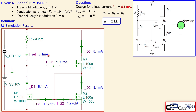In the simulation circuit, M1, M2, and M3 all have the same length and width of 100 micrometers. The simulation confirms IRF is 8.1 milliamps and the load current is also 8.1 milliamps. The gate currents are essentially zero — on the order of femtoamps (approximately 1.9 and 1.78 femtoamps), which is 10⁻¹⁵ amps, negligible compared to milliamps. ID1 and ID2 are also confirmed at 8.1 milliamps.